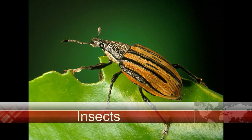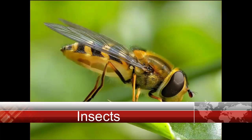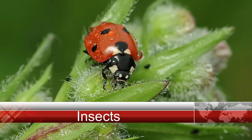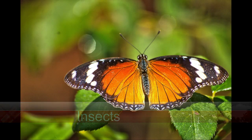Last but not least are the insects. Insects are identified by having six legs and either one or two pairs of wings, meaning not all bugs you see are insects.